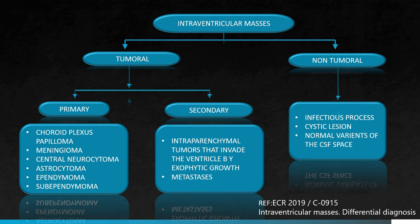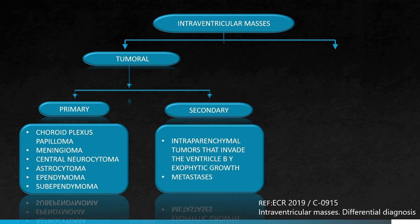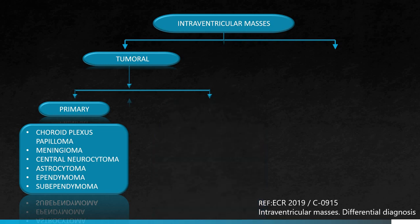Let's have a look at the approach now. We know that the lesion is tumoral in origin. So possibilities of non-tumoral etiologies like infectious process, cystic lesion, and normal variant of CSF space appear less likely. We also know that the patient does not have any intra-parenchymal lesion and brain edema. The patient is young and does not have any primary malignant tumor, so the possibility of secondary also appears less likely.